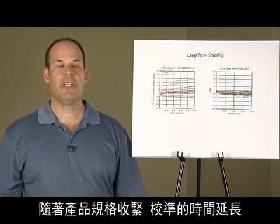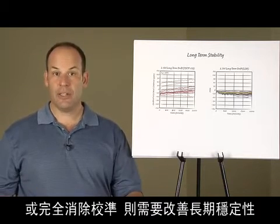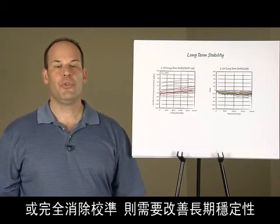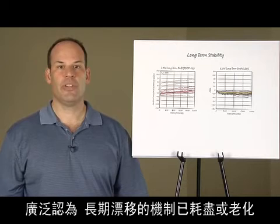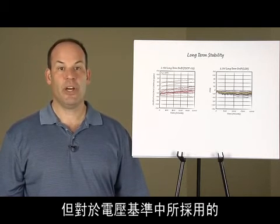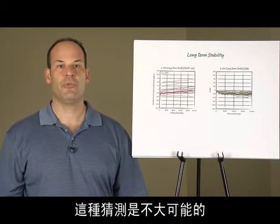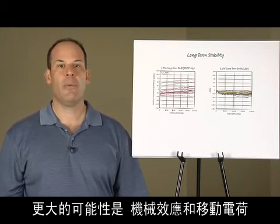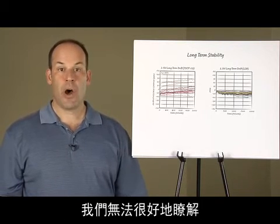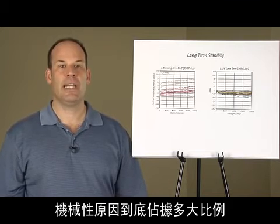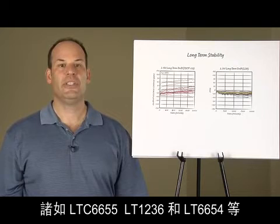As product specifications tighten and calibration periods lengthen, or calibration is eliminated entirely, there is a need for improved long-term stability. It has been widely assumed that the mechanism for long-term drift has been wear-out or aging. However, this is unlikely for the types of devices and bias conditions used in voltage references. More likely, the cause is a combination of mechanical effects and mobile charge. It has not been well understood just how much is mechanical in nature.